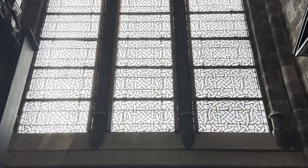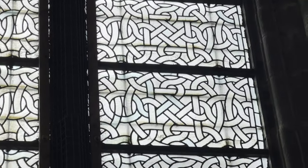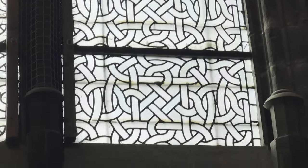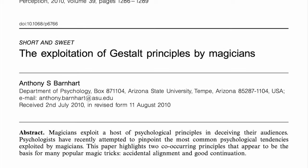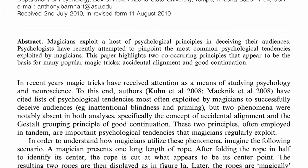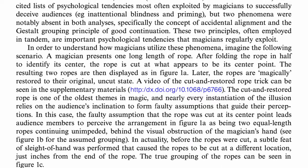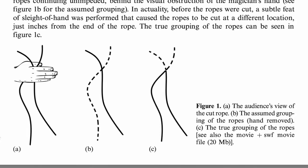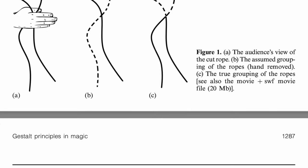Principle three: continuity. Our eyes follow a continuous path. Here's another example from my trip to Ghent, where I visited St. Bavo's Cathedral and noticed the pattern used in the tall windows — see how it looks like ropes or tubes or thread that's interlaced even though we can't see the entire thread. I also came across an article about magicians using gestalt principles, particularly the principle of continuity in rope tricks, in which our mind perceives the rope as being continuous even though the part where it's not is being covered by the magician's hand.